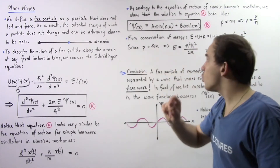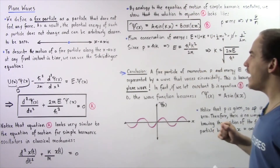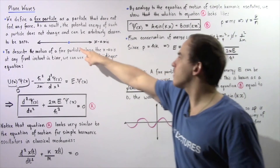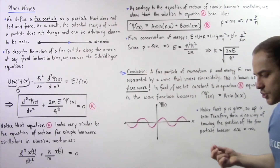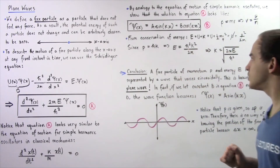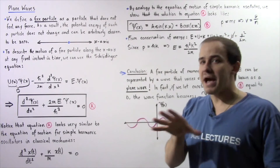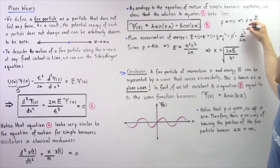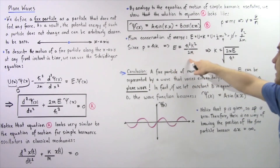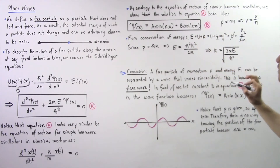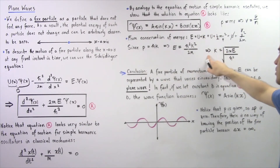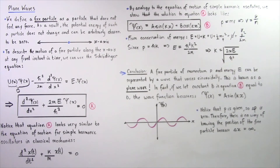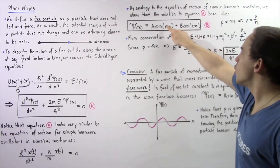Recall that momentum is also related to K by the equation: the momentum of our free particle equals K times h-bar. This equation was discussed in the lecture on the time-independent Schrödinger equation — if you're not certain where it comes from, go back and watch that lecture. If we replace P with K times h-bar, we get E equals h-bar squared times k squared divided by 2m. Solving for k, we see that k equals the square root of 2mE divided by h-bar squared. This is what our k is.